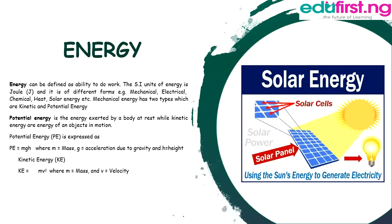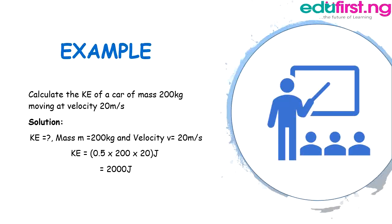For the purpose of this class, we will focus on mechanical energy. Mechanical energy has two types: kinetic energy and potential energy. Potential energy is the energy of a body at rest, while kinetic energy is the energy of an object in motion. Potential energy PE equals MGH, where M is mass, G is acceleration due to gravity, and H is height. Kinetic energy KE equals half MV squared, where M is mass and V is velocity.